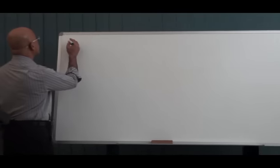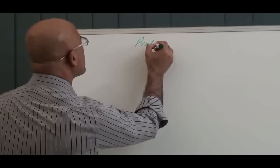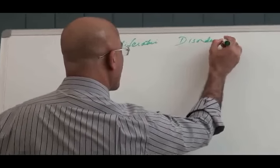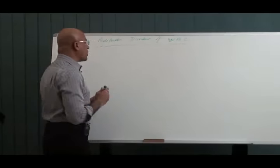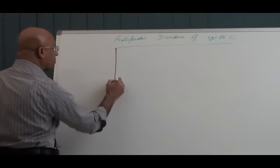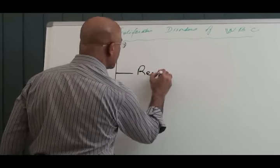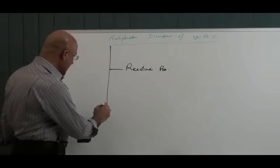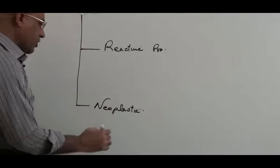When we talk about the proliferative disorders of white blood cells, there are two types: number one is reactive proliferations, and number two is neoplastic proliferations.